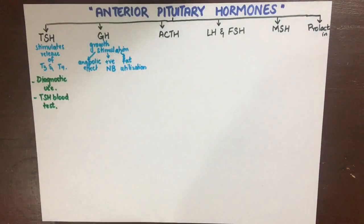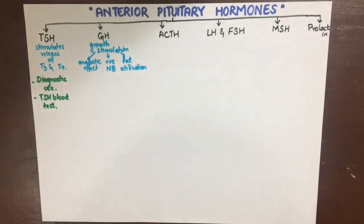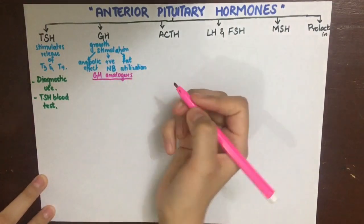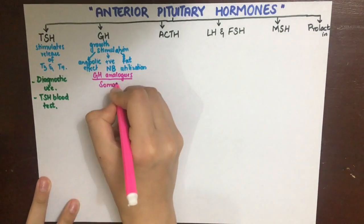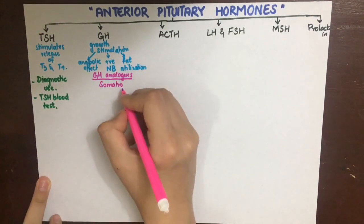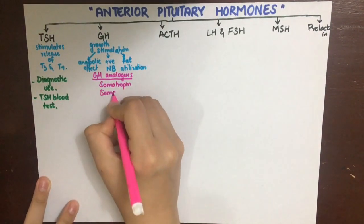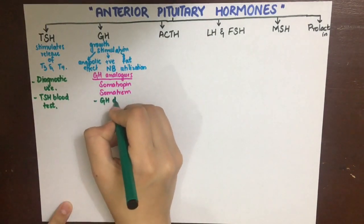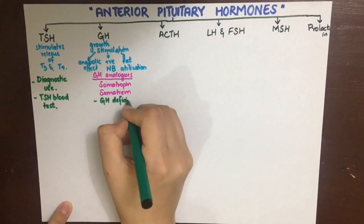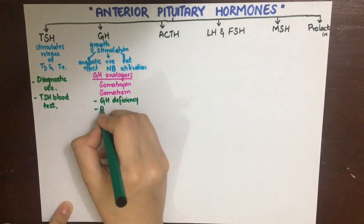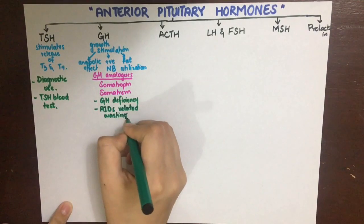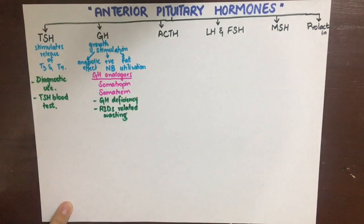The growth hormone analogs are the drugs somatropin and somatrem. Their use is mainly in growth hormone deficiency in children and adults. They can also be used in AIDS-related wasting, and some people use them for preventing aging, although this is not really supported by clinical trials.